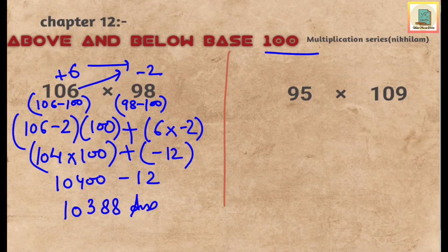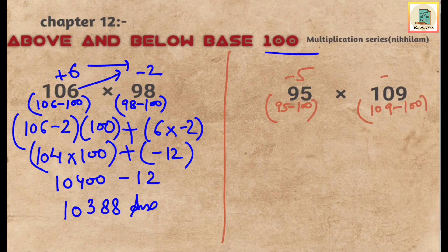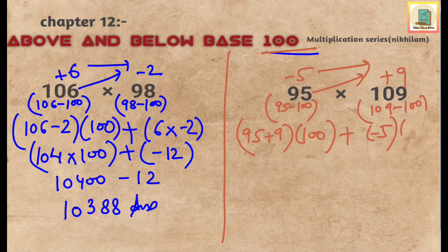The next question is 95 multiplied by 109. We take the deviation: 95 minus 100 gives minus 5, and 109 minus 100 gives plus 9. So first number plus the second deviation: 95 plus 9 multiplied by the base 100, plus multiply the deviations: minus 5 multiplied by 9 gives minus 45.